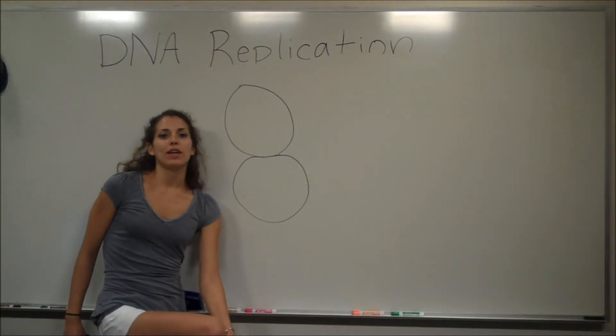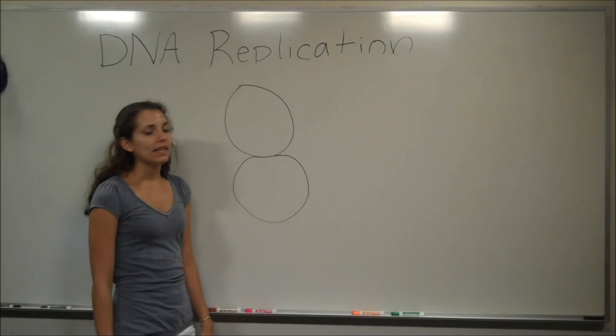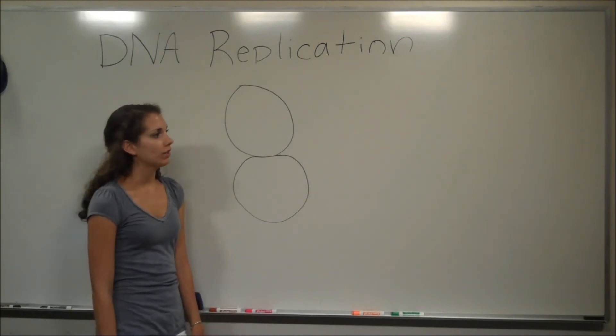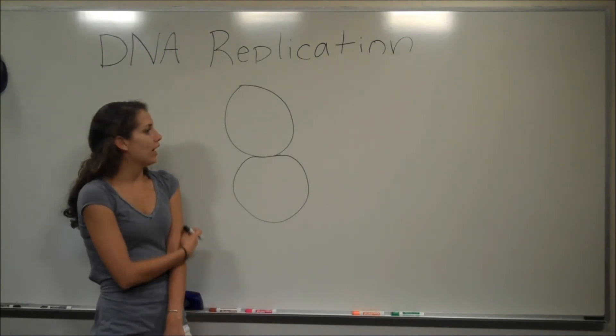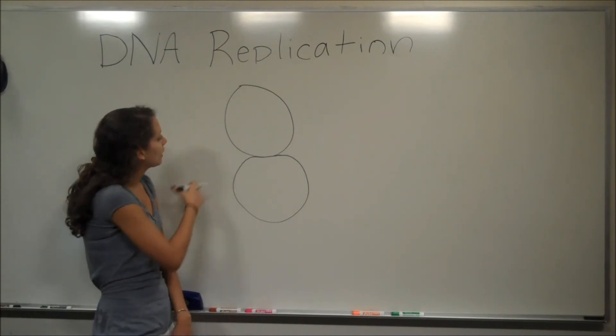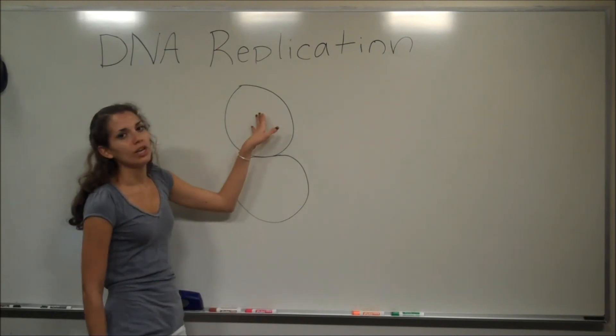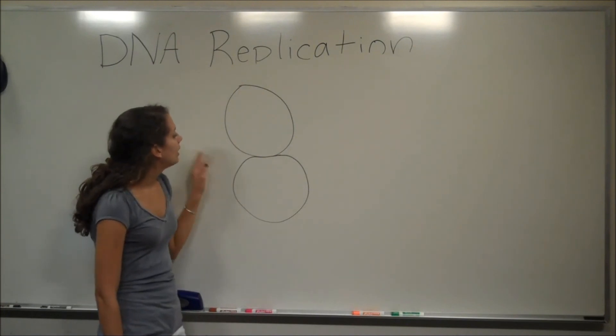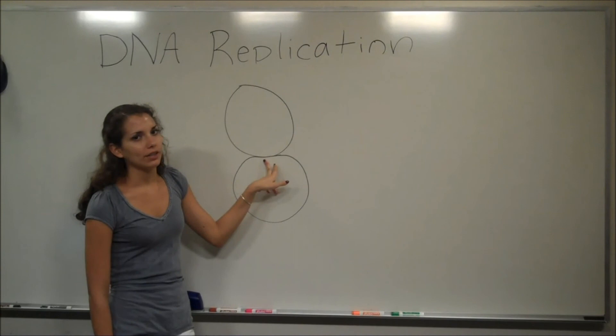Okay, so there's another enzyme that you need to know about that's involved in the termination of DNA replication. So after DNA replication is almost finished, you're going to have something that looks like this. So this is the original circular chromosome. This is the daughter one that was made, and they're still joined together.